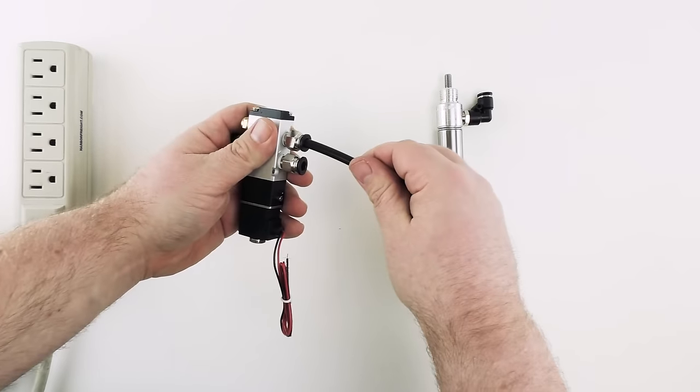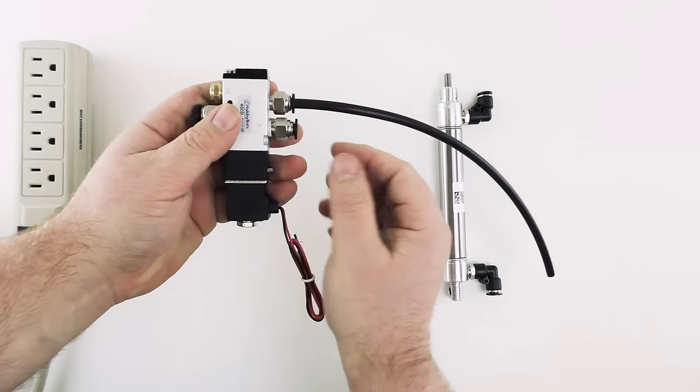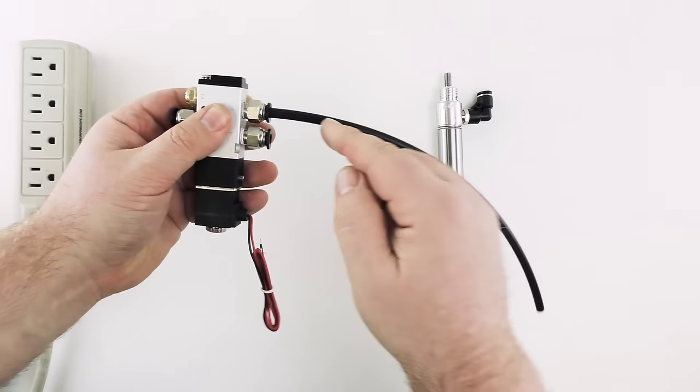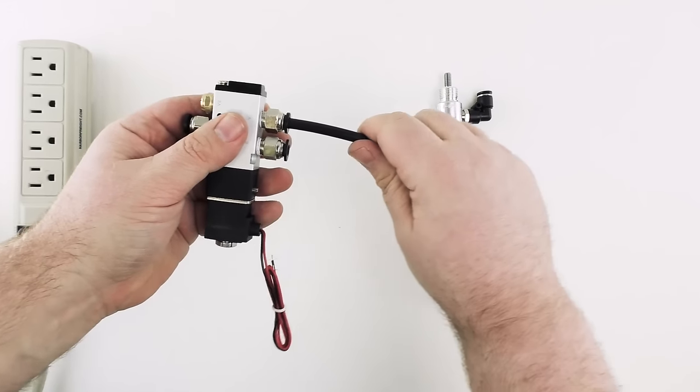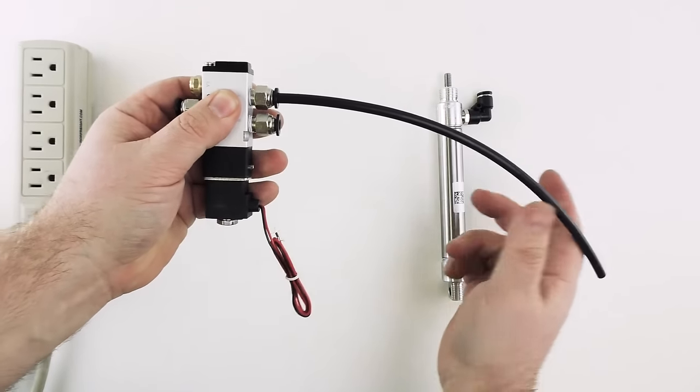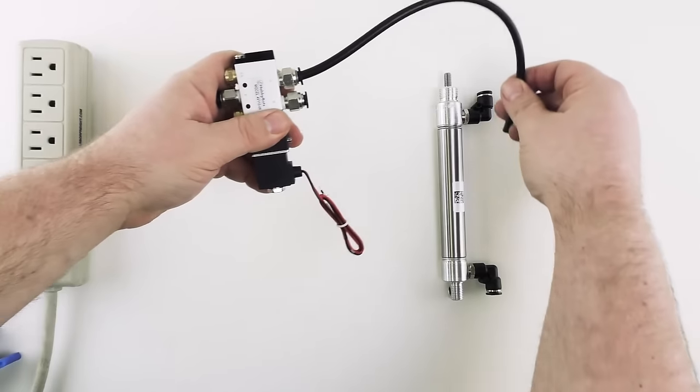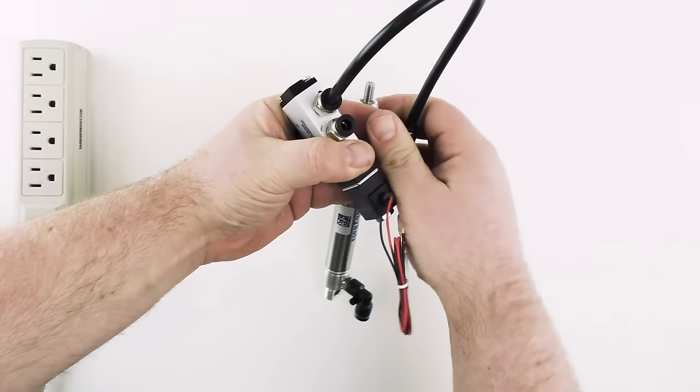We're going to take one of the pieces, insert it into the first of the two fittings. You just press it in firmly until you feel it slightly depress into the fitting. You should be able to tug on it and not be able to pull it out. And port A we're going to be putting into the top port of our cylinder.